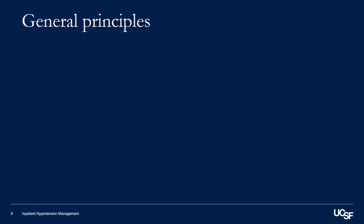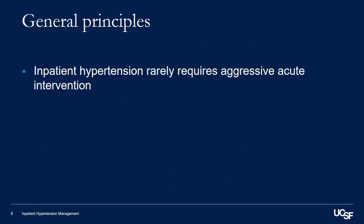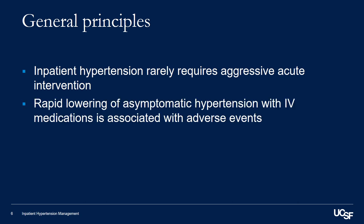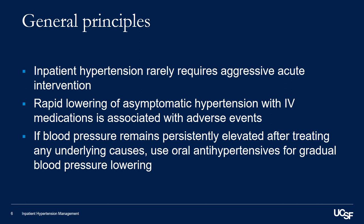Some general principles: inpatient hypertension rarely requires aggressive acute interventions, and we know that rapidly lowering asymptomatic hypertension with IV medications is associated with adverse events. If a patient's blood pressure remains persistently elevated after treating any underlying causes, then using oral antihypertensives to gradually lower the blood pressure is preferred.